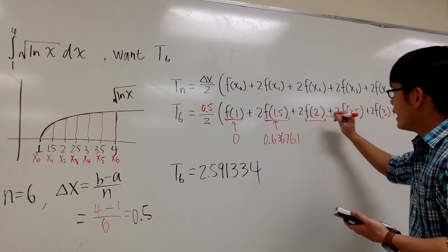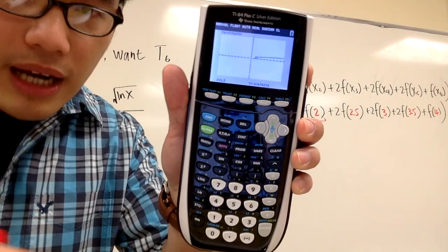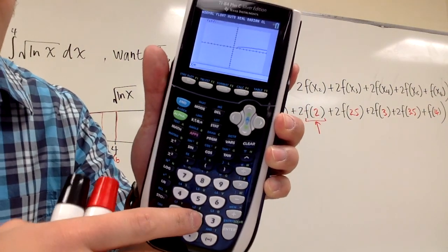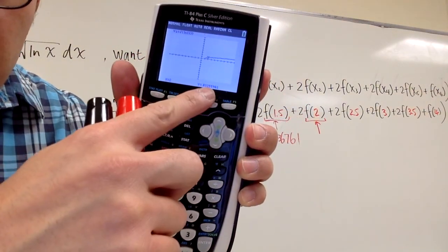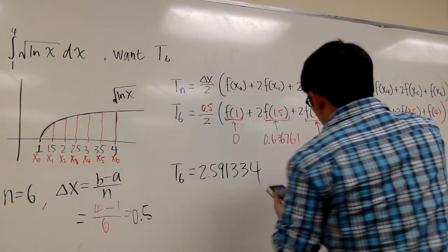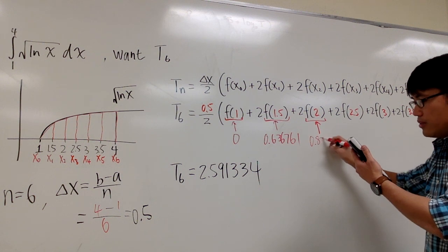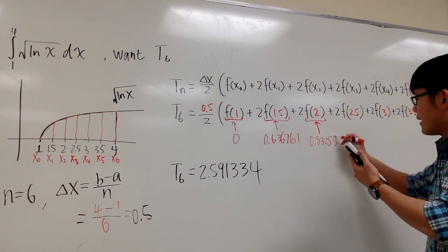And now we can do the same for f of 2. So let me just do this one more time. All I need to do is just enter the 2 on the calculator, and I can get that for the y value. So I can just put it down right here. Yeah, this is 0.83255.